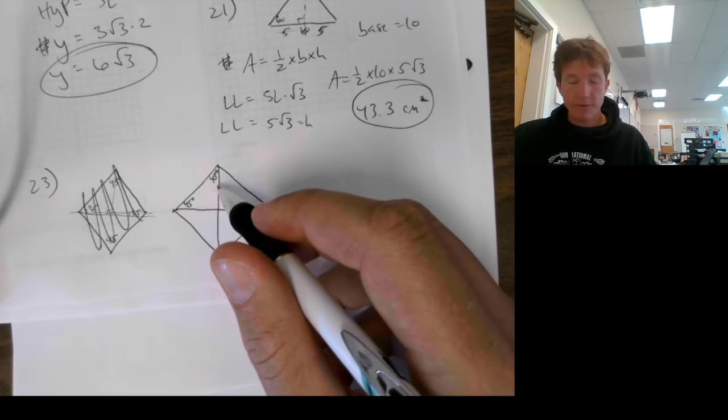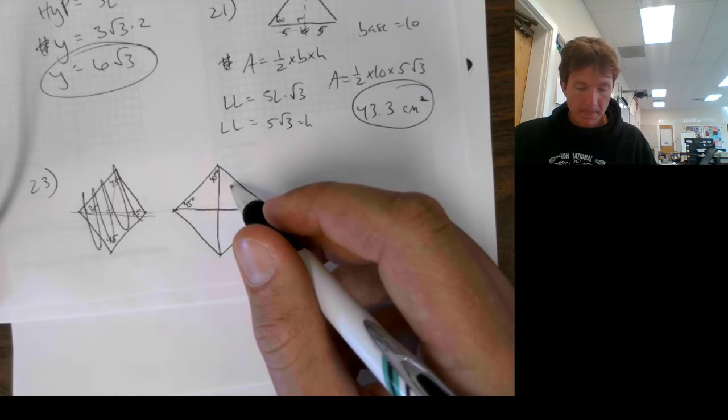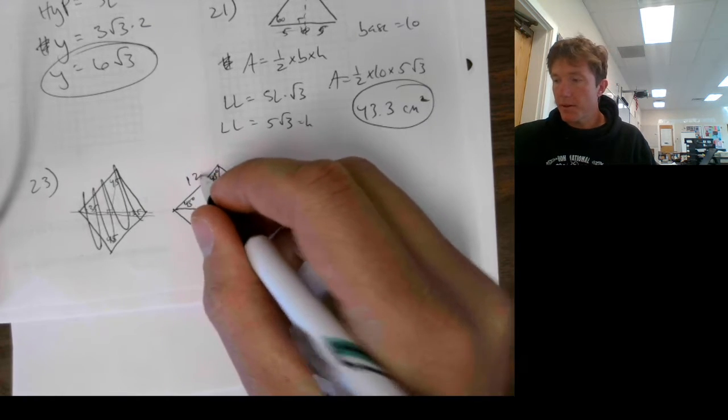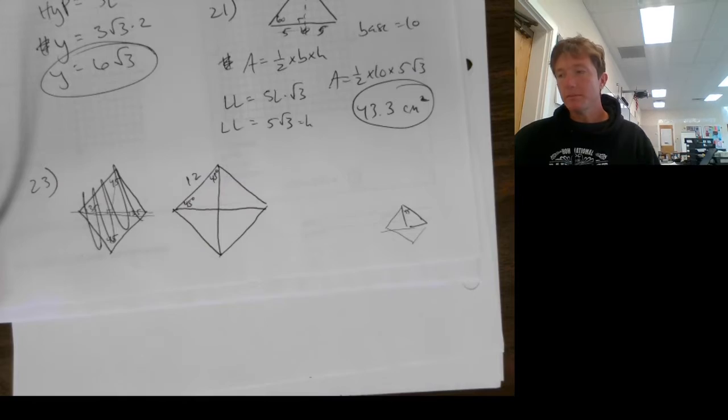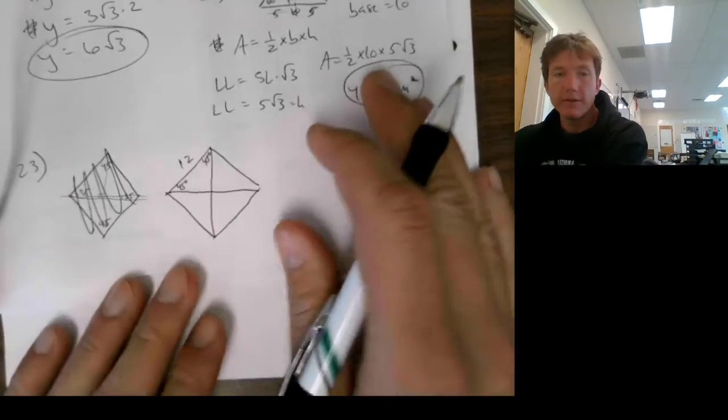So this is going to be a rhombus. We've got our 45 degree angles. The sides are 12 meters long. So this is a 45-45-90 triangle.